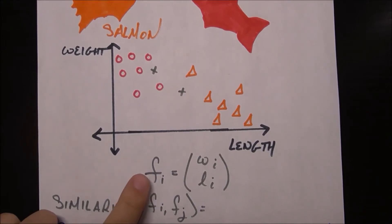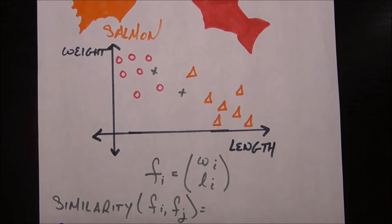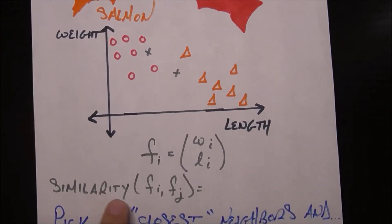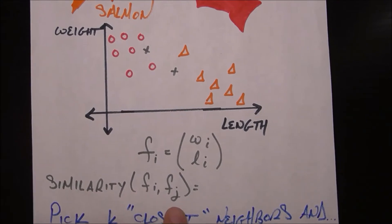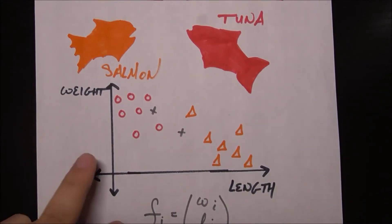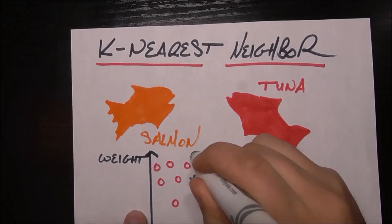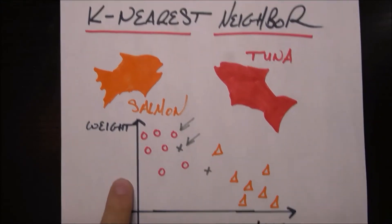So given a mystery fish f sub i, it only has two things about it: it has a weight w sub i and a length l sub i. Now how do we give a mathematical notion of a similarity between this mystery fish and some other fish f sub j which maybe we do have data for? For example, if we have this x as our mystery fish, how do we use data about this tuna to help us make a decision?